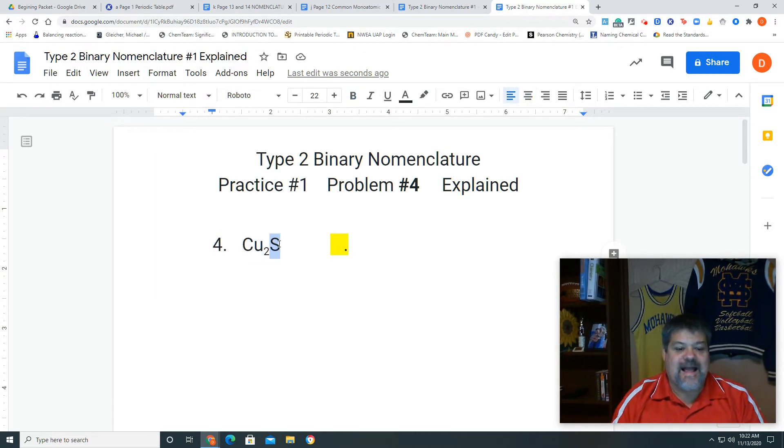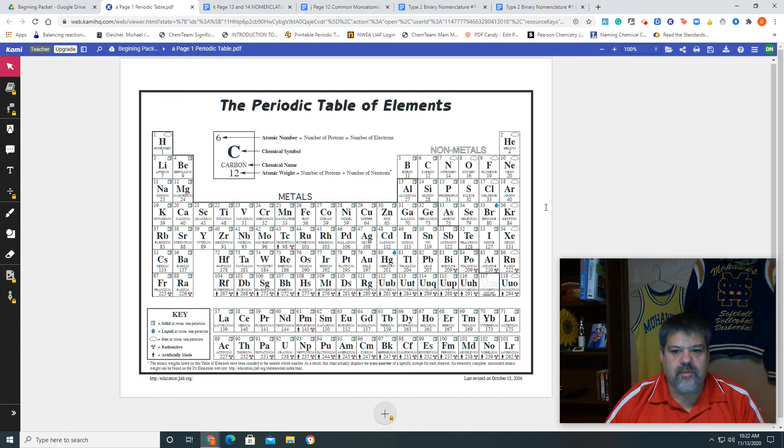Because it is still an ionic compound, we have to have our charges, and so the first thing we need to do is find the charge of sulfur. If we don't know what sulfur is, let's go back to the periodic table, and we see that S is sulfur, and then Cu is copper. So we have sulfur and copper.